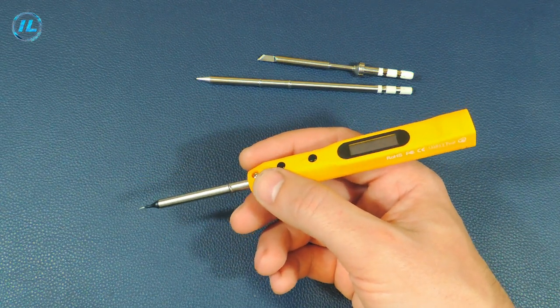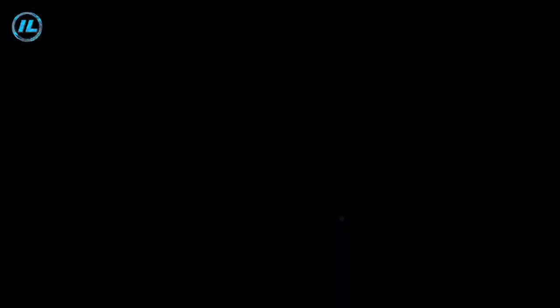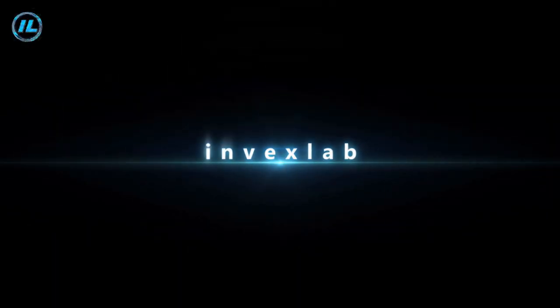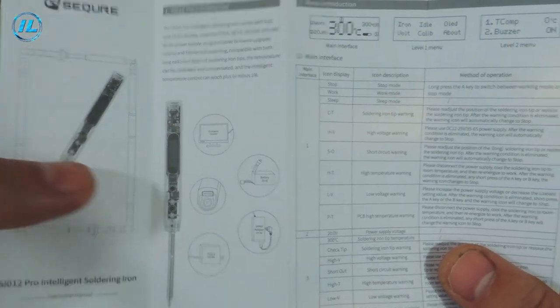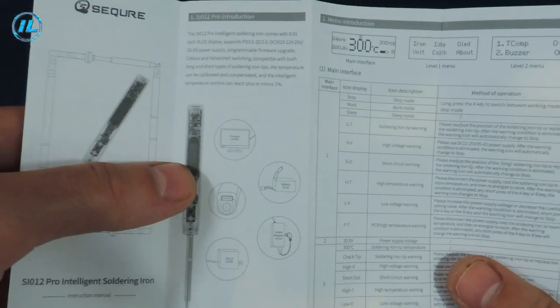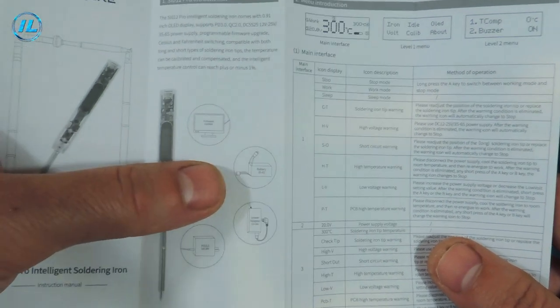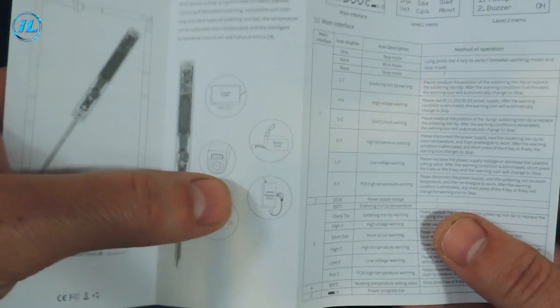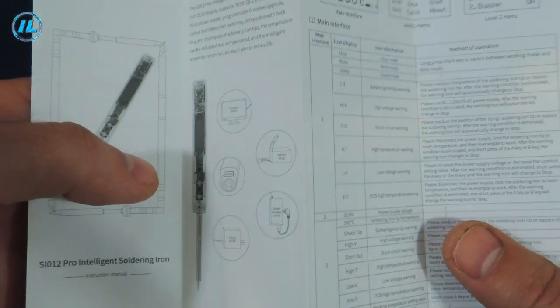Let's now take a closer look at the characteristics of this soldering iron. If you pay attention to the instructions for this soldering iron, then here we see that the operating voltage is in the range from 12 to 25 volts. Moreover, the power source can be either a rechargeable battery, a conventional power supply or a charger with support for the power delivery protocol.